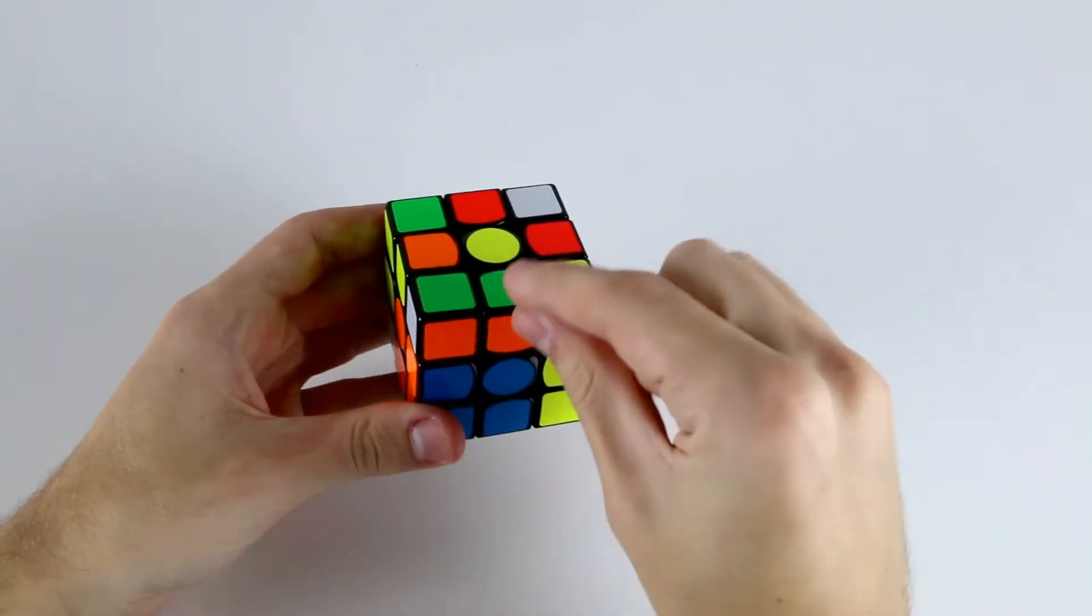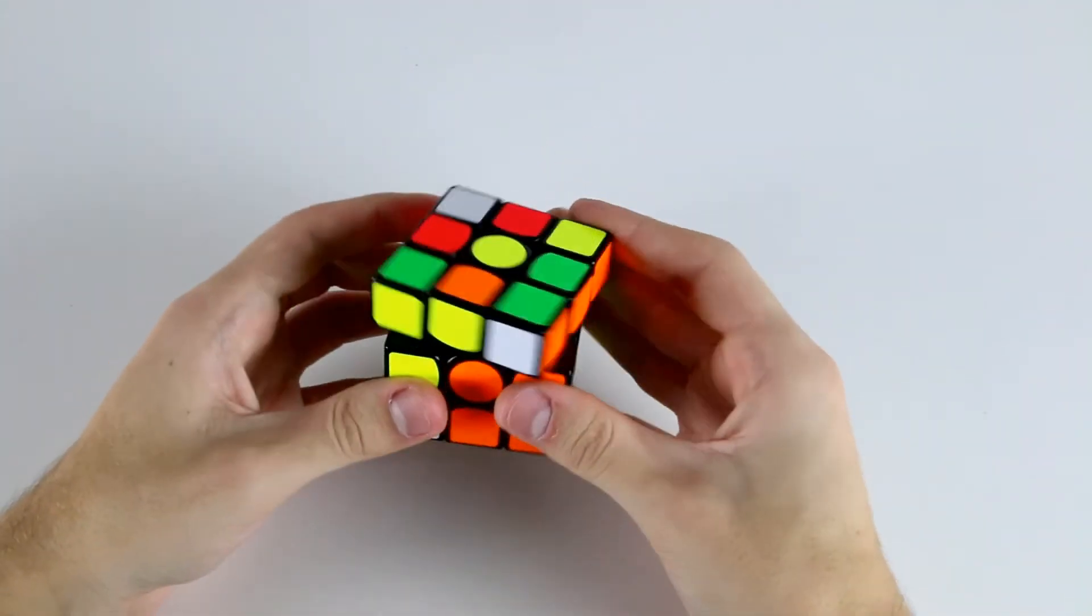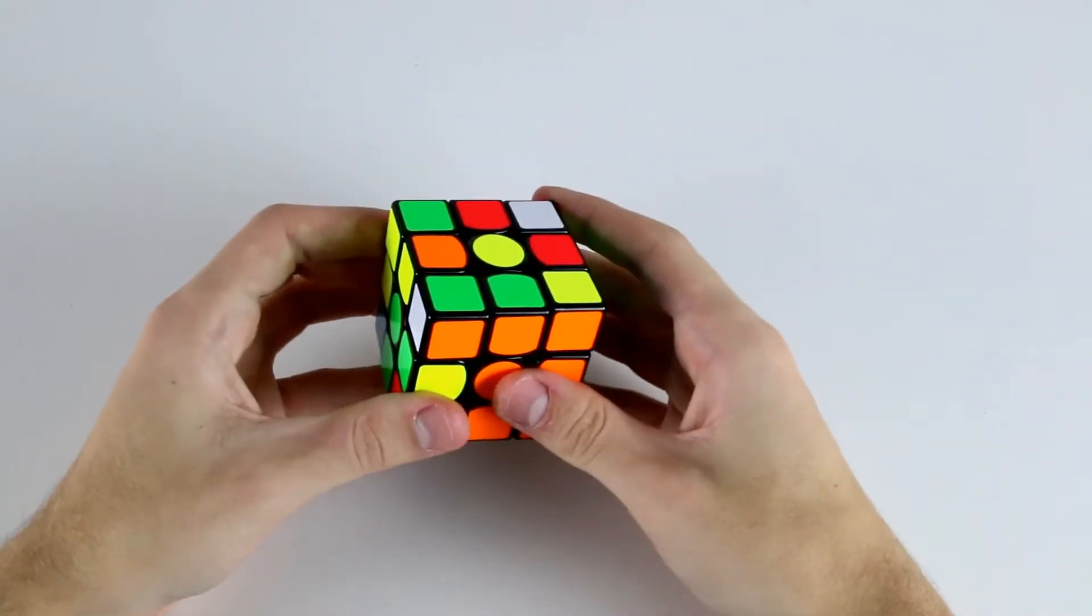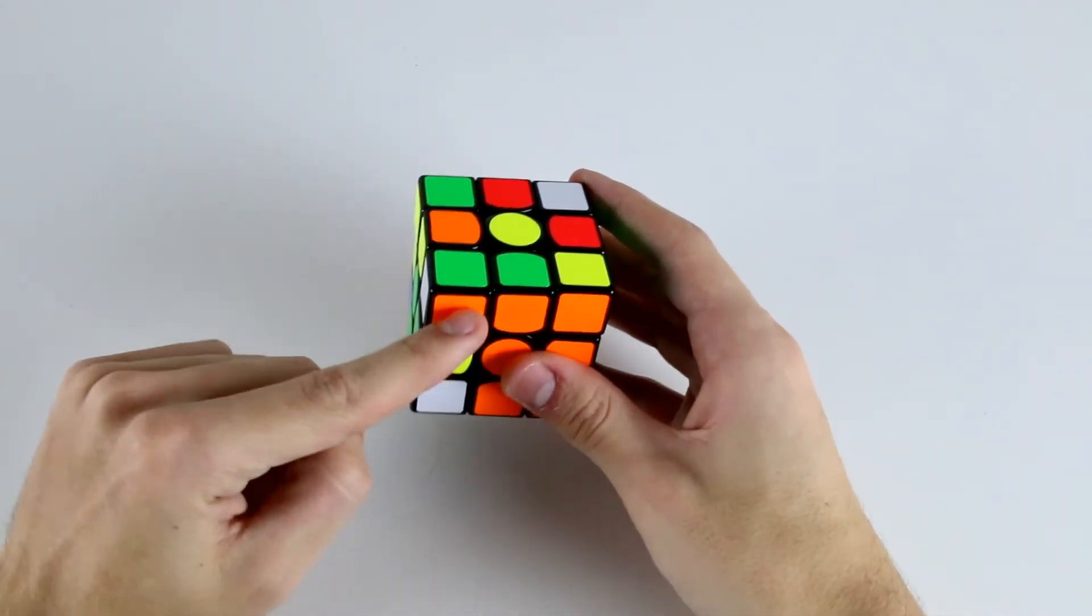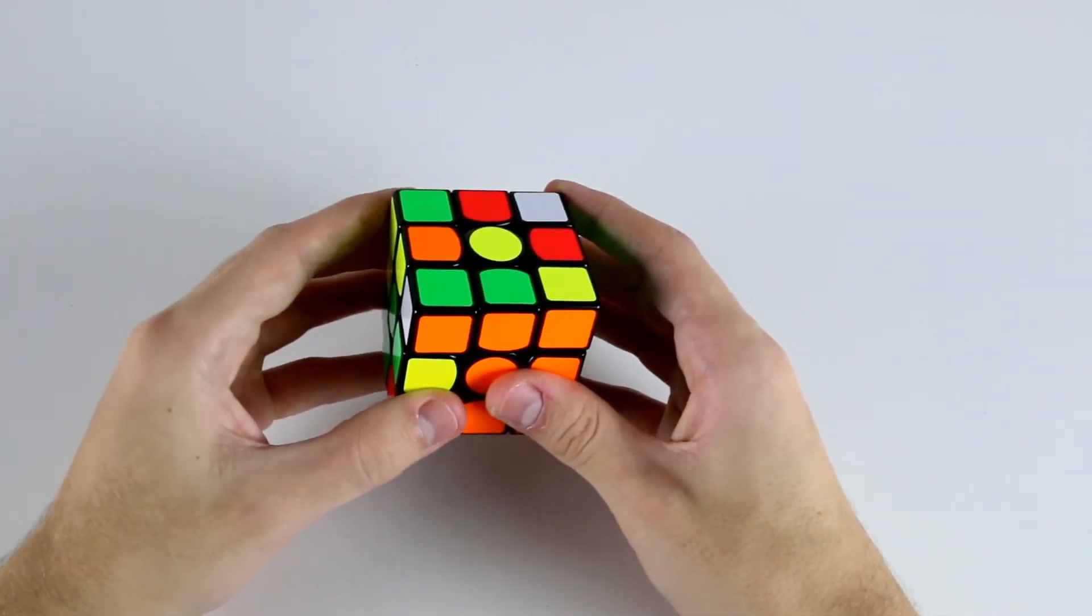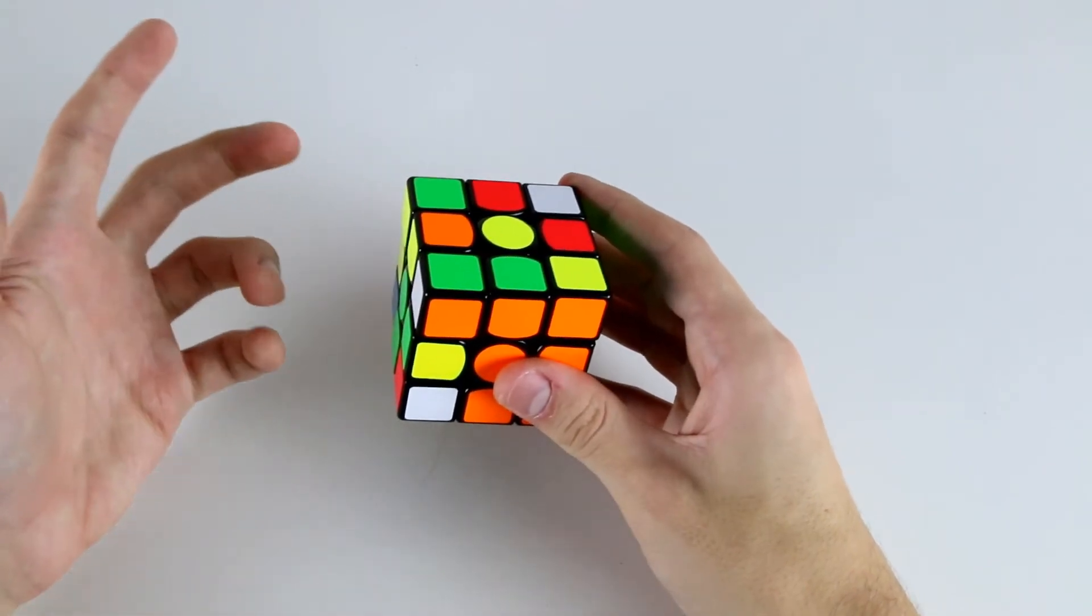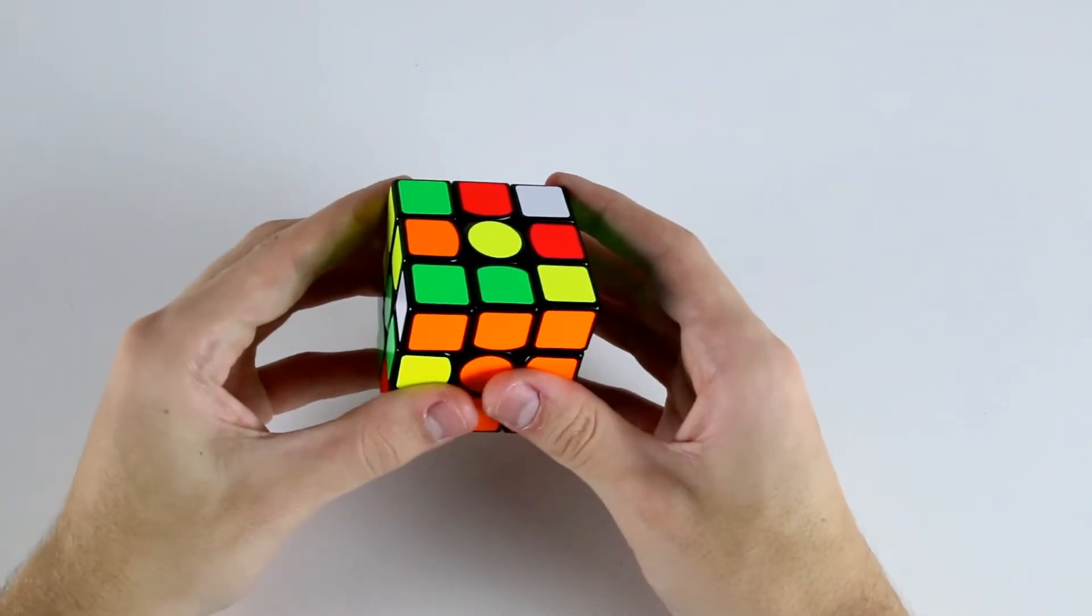Now remember that we had this other F2L edge which was misoriented and it's actually been paired up with its F2L corner. However, we have it in this situation and remember, because it was misoriented, we'll most likely need to do a rotation to actually insert this F2L pair.